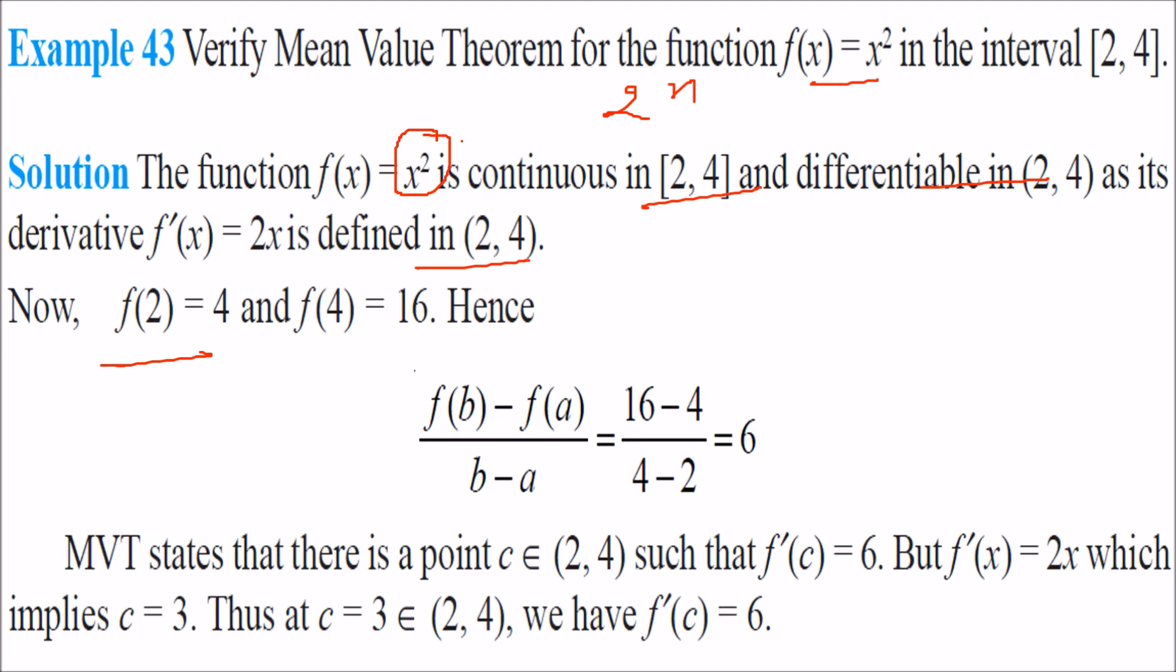f(2) is what? You place 2 here, you get 4. You place 4 here, 4 times 4 is 16. You get f(4) equal to 16. So what is the mean value theorem? (f(b) minus f(a)) by (b minus a), 16 minus 4 by 4 minus 2. We are taking (f(b) minus f(a)) is nothing but f(4) minus f(2). And f(b) minus f(a) will be 16 minus 4. You get 6.